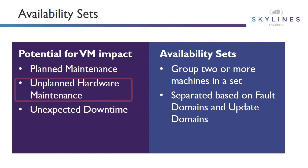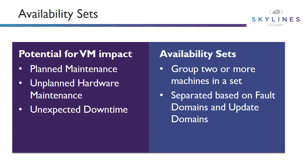The second one is unplanned hardware maintenance. This is when Microsoft detects using their monitoring systems that a failure may be about to occur on the underlying host. Similar to planned maintenance, they need to move your virtual machine, or sometimes very quickly they have to shut all the virtual machines down, do the maintenance, and then bring that host back up.